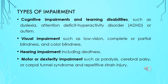Before starting in detail, first understand about the types of impairment. Cognitive impairments and learning disabilities, such as dyslexia, attention deficit hyperactivity disorder (ADHD), or autism. Visual impairments such as low vision, complete or partial blindness, and color blindness. Hearing impairment including deafness. Motor or dexterity impairment such as paralysis, cerebral palsy, or carpal tunnel syndrome and repetitive strain injury.